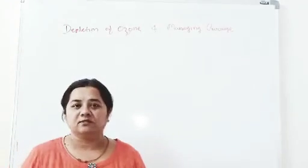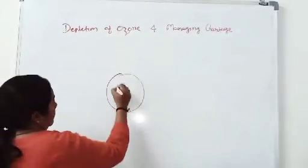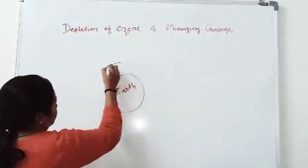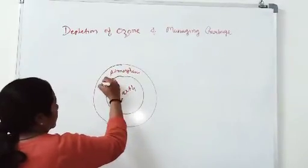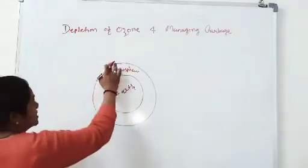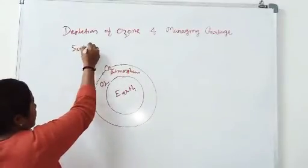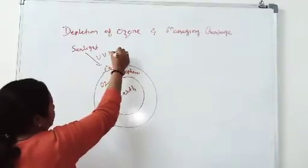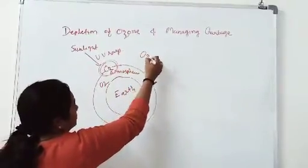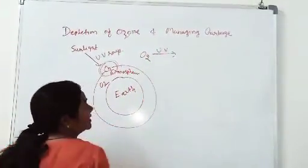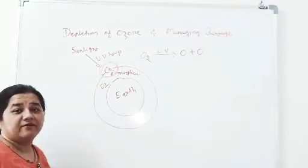Depletion of Ozone — Ozone is a protective layer on our Earth. In our Earth there is an atmosphere layer. In the outer layer there is only O2. The sunlight of UV rays — ultraviolet rays — acts on the oxygen molecule. The ultraviolet rays convert the oxygen molecule into oxygen atoms.